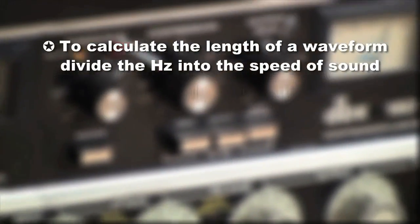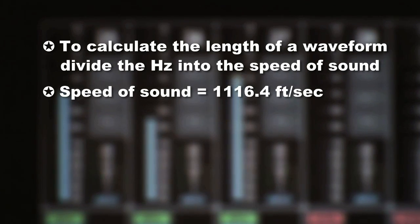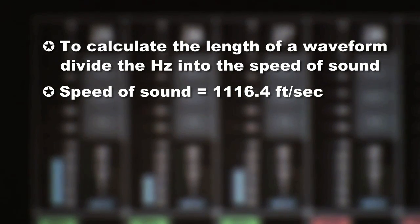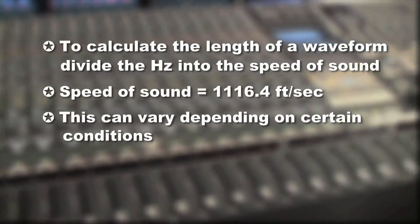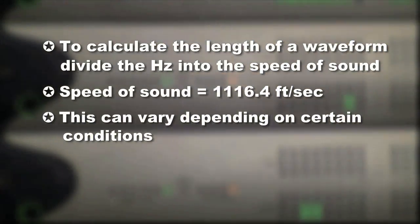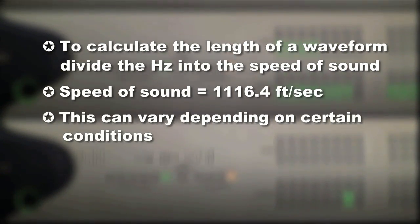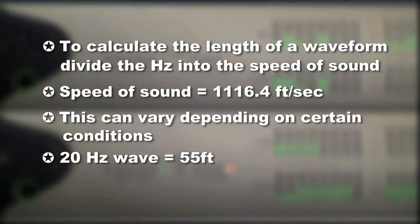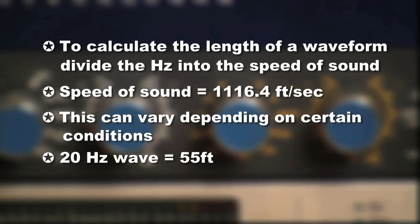There is a way of determining how long a waveform actually is by dividing the number of hertz into the speed of sound. The speed of sound is approximately 1,116.4 feet per second or 761.2 miles an hour. I say approximately because it's dependent on conditions such as altitude, atmosphere and so on. To give you an idea of just how long these wavelengths can be, a 20 Hz wave at the lower threshold of our hearing would be around 55 feet in length.